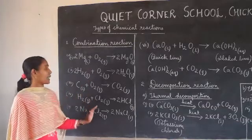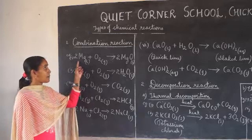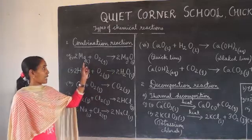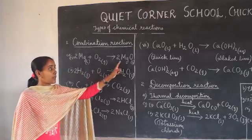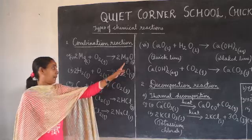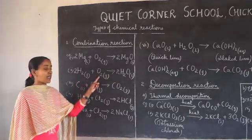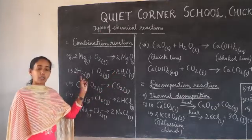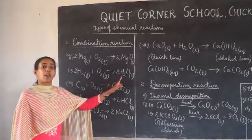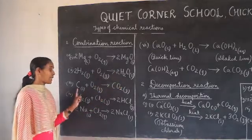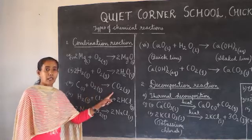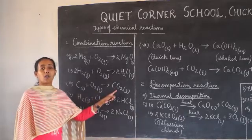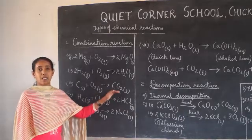See, many examples are given here. The first one: magnesium combines with oxygen to form magnesium oxide — two elements, magnesium and oxygen, combine together to form a single product, magnesium oxide. Similarly, hydrogen combines with oxygen to form water. Hydrogen and oxygen are the two elements that combine together to form the single product, water. Then, carbon combines with oxygen to form carbon dioxide, which is a single product.